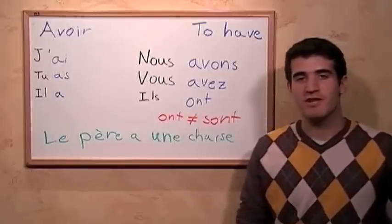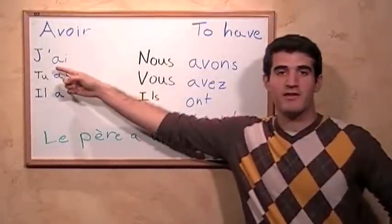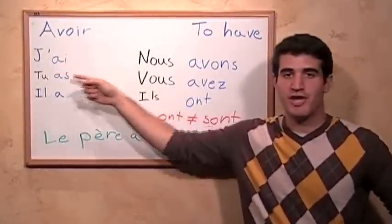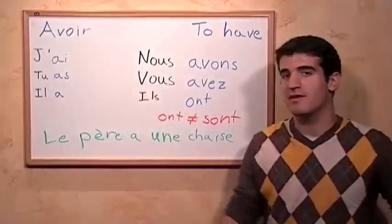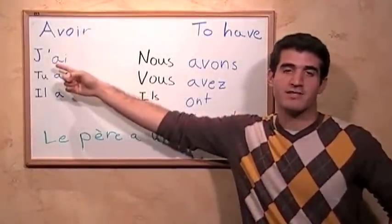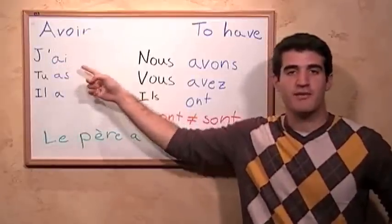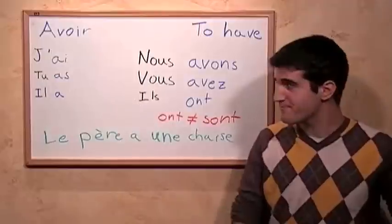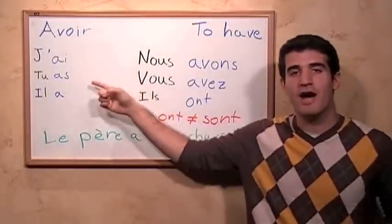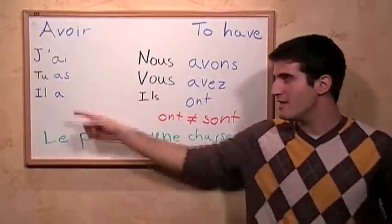For the first person singular, we have -ai, and with the pronoun je, we get j'ai. Because this starts with a vowel, the je contracts into j' apostrophe, making j'ai. For the second person singular, we have tu as. The third person singular, we have il a.